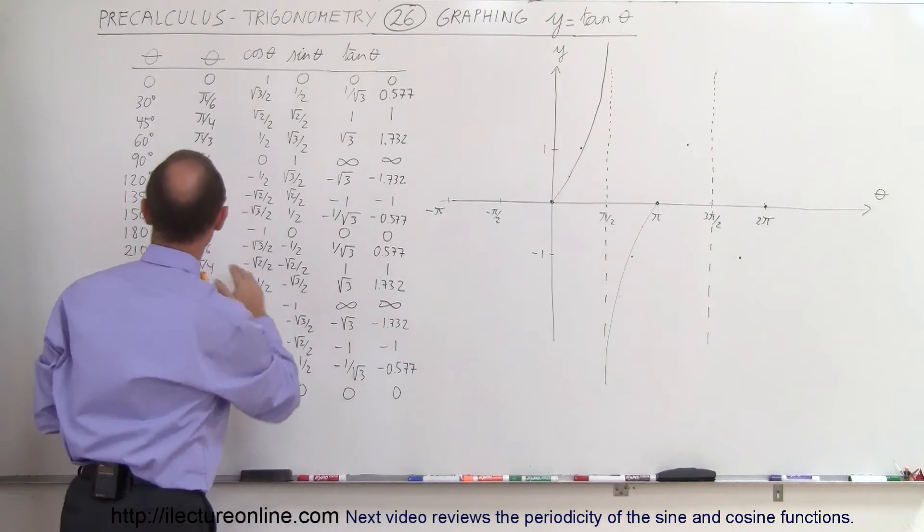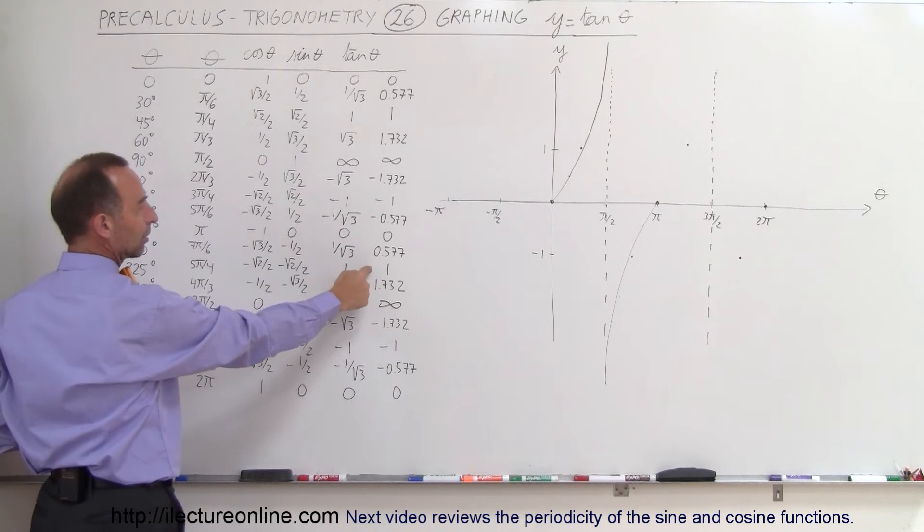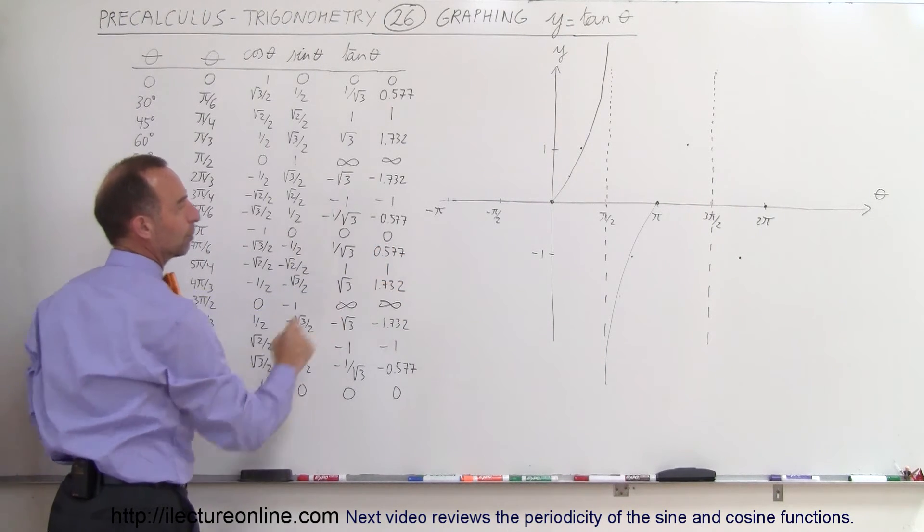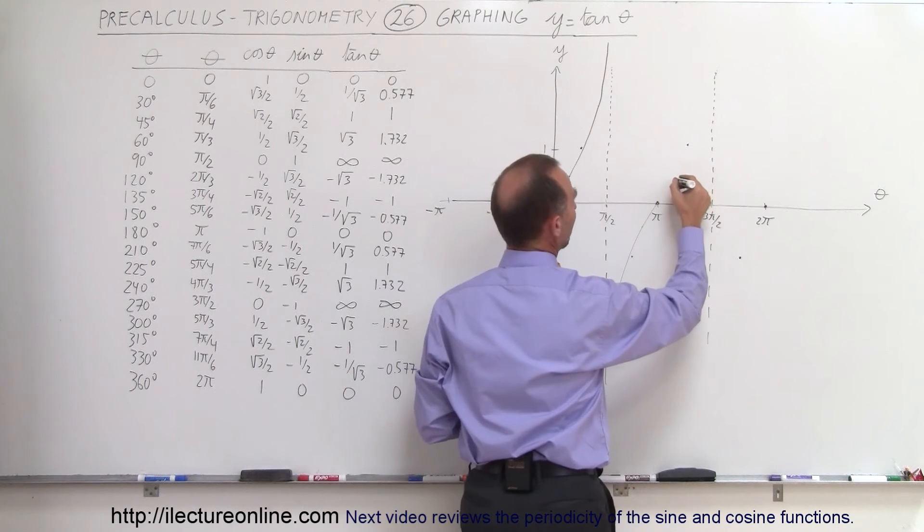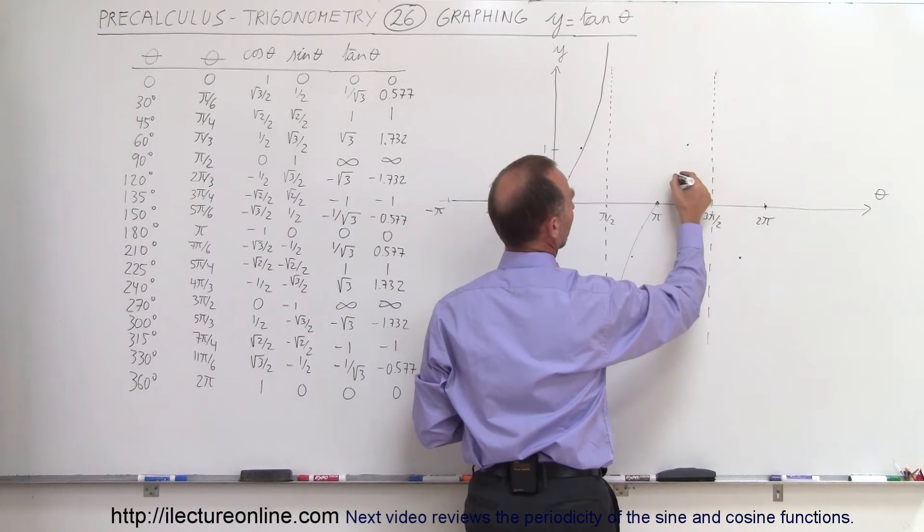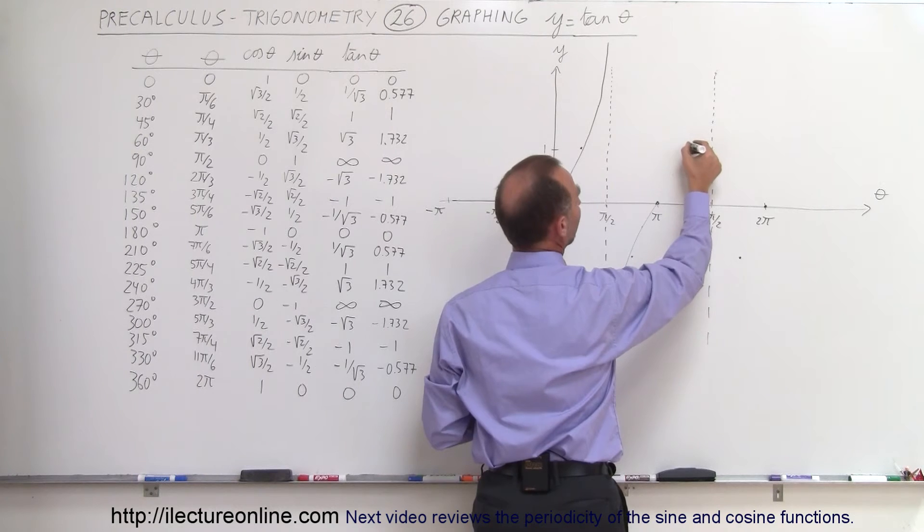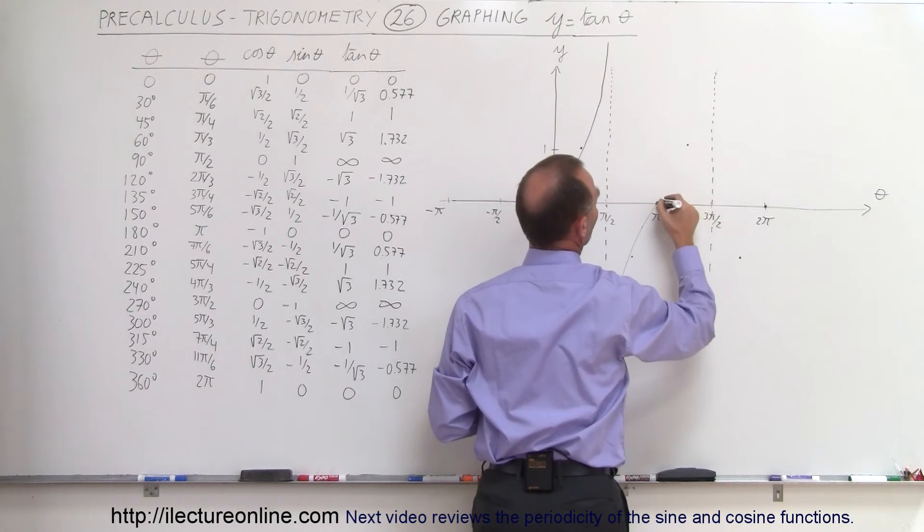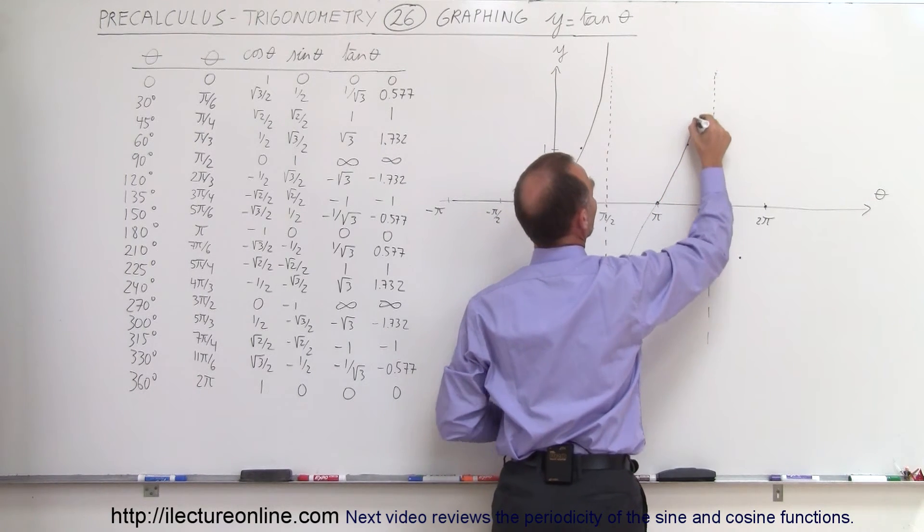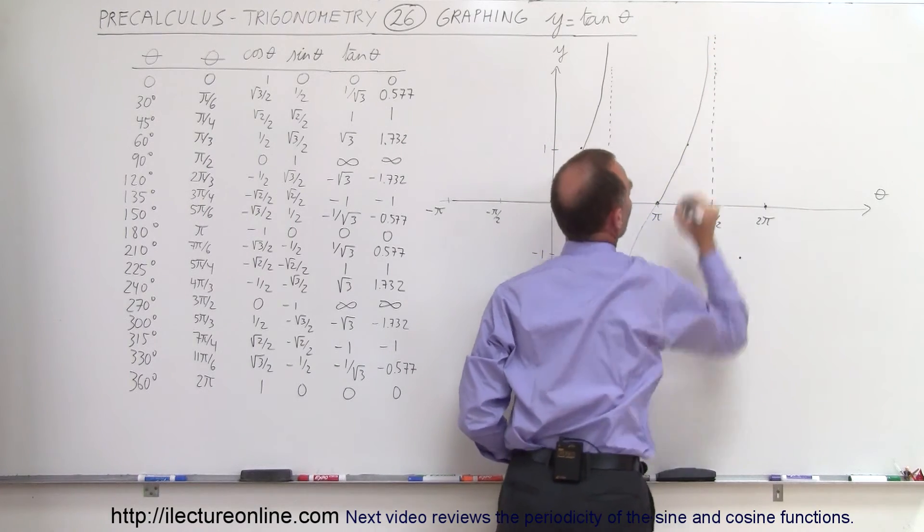Then past pi, past 180 degrees, we're back on the positive side. So positive 0.5, 1, 1.7 over here. So it would be 0.5, 1, and then 1.7 over here. So you can see that the curve continues on like this. And again becomes asymptotic over here.